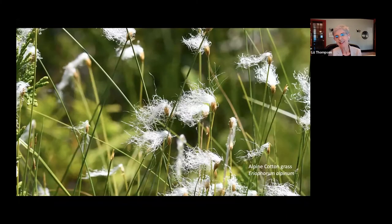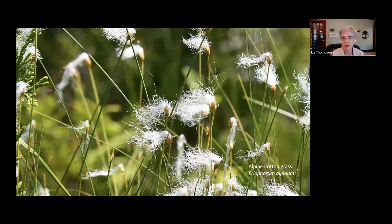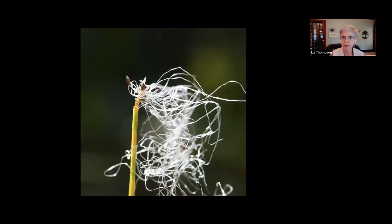Another fascinating plant in bogs and fens is cotton grass — there are several species. One I love is a tiny little thing, only about 10 inches tall, with tiny tufts of cotton. Those long tufts are very modified flower parts. Here you see one maturing — the little tiny fruits look like seeds and have white hairs attached. As everything falls apart, those white hairs will fly on the wind and take the seeds to a new location.